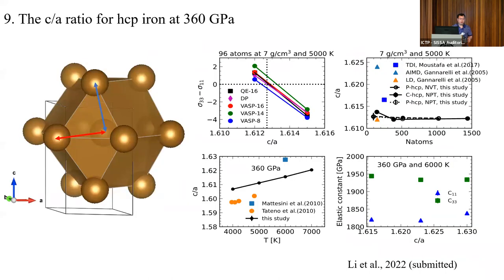Now I'll show a few examples of how the DP model can solve long-standing problems in Earth science. The first example is the c/a ratio for HCP iron at 360 GPa. For HCP iron the coordination number is 12. However, those 12 neighboring atoms are not distributed evenly — the atomic distances represented by the blue arrows differ from those represented by the red arrows. This has an impact on sound wave propagation: sound traveling in one direction may have a different velocity than in another direction, which significantly affects how we interpret seismic observations.